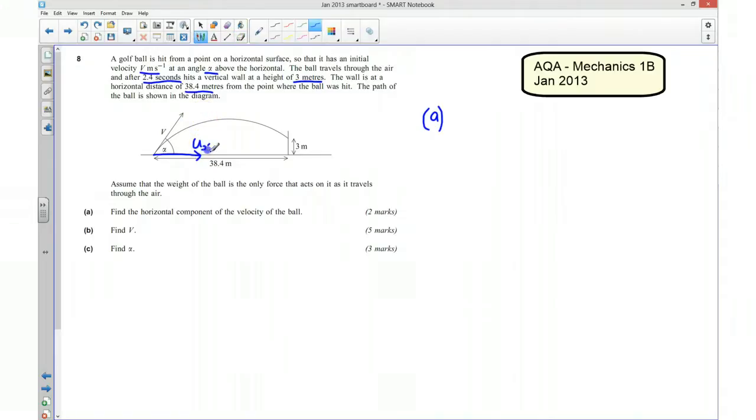Because there isn't any acceleration horizontally, I could just say that this horizontal velocity is going to be equal to the horizontal distance divided by time, so it's just constant velocity. So we can say that ux is equal to the distance travelled which is 38.4 divided by the time taken to get there which is 2.4 seconds and that works out to be 16 metres per second.